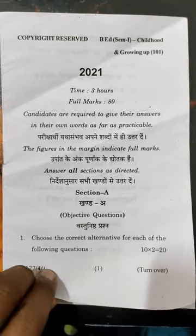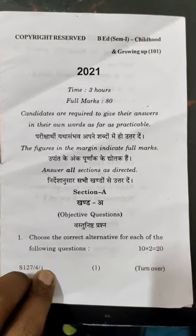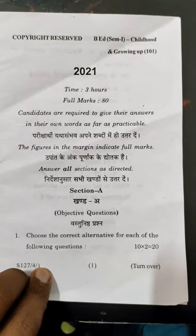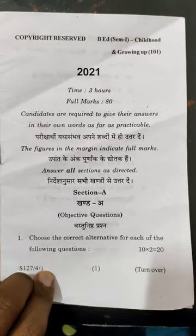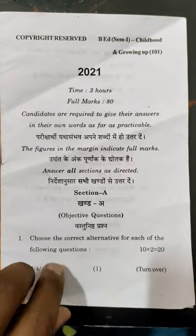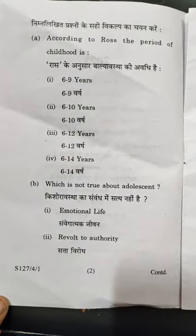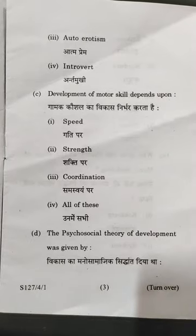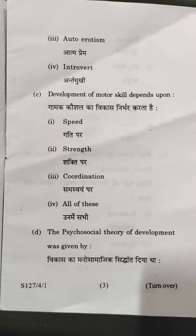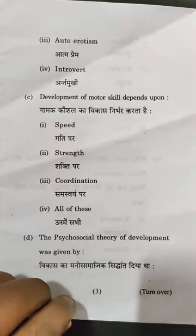Section A has objective type questions in which there are 10 questions, and you have to attempt all of these 10 questions. Marks awarded is 2. You will be given 3 hours for attending this question paper.